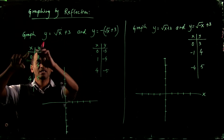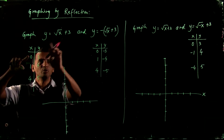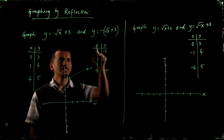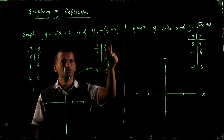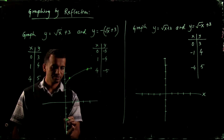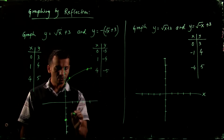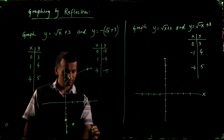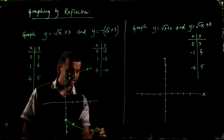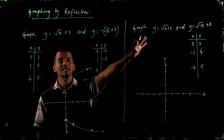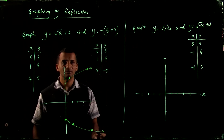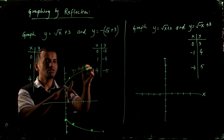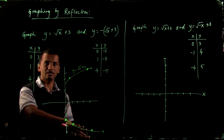Let me first plug in the x values and get the y values for the first equation. The graph of y equals 2 square root of (x plus 3) — now I want to find the graph of y equals 2 times negative square root of (x plus 3). When x equals 0, y equals negative 3. When x equals 1, y equals negative 4. When x equals 4, y equals negative 5. The graph will look like this — when you multiply the whole right-hand side by a negative sign, the original graph y equals 2 square root of (x plus 3) is reflected about the x-axis.